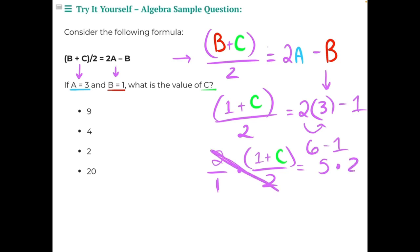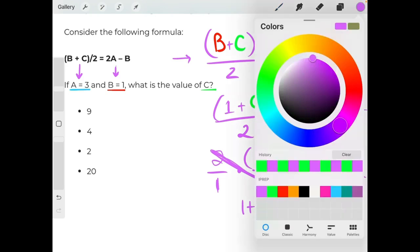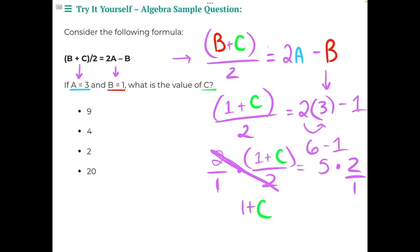And on the other side we would also multiply by a fraction of 2 over 1, leaving us with just the numerator 1 plus c. And then on the right side of the equal sign, we would have 5 times 2, because 2 over 1 is just 2, so 5 times 2 would give us 10.